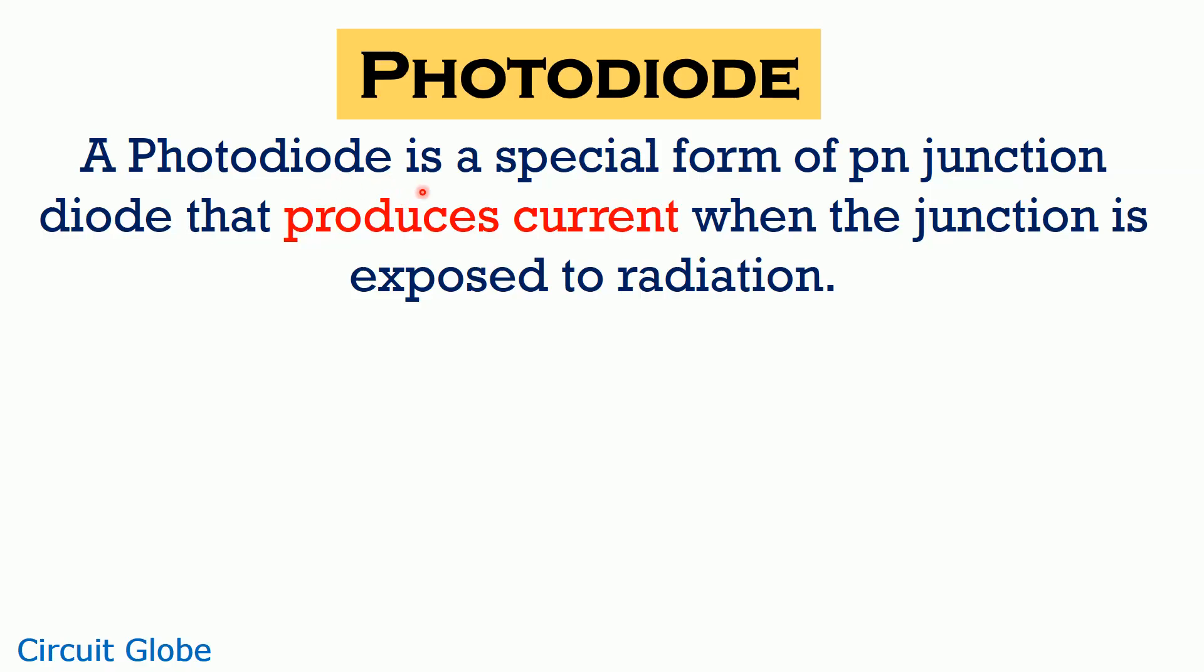A photodiode is also a PN junction device that has the ability to generate or produce current when the junction is exposed to radiation or light.